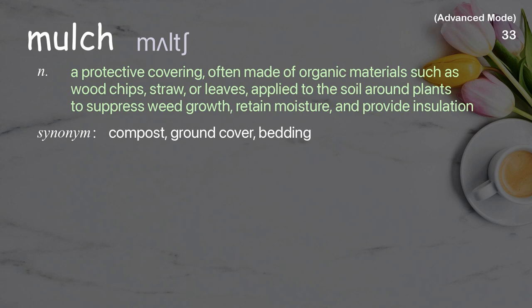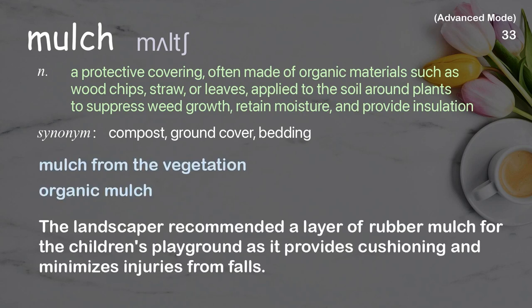Mulch: a protective covering, often made of organic materials such as wood chips, straw, or leaves, applied to the soil around plants to suppress weed growth, retain moisture, and provide insulation. Examples: organic mulch. The landscaper recommended a layer of rubber mulch for the children's playground as it provides cushioning and minimizes injuries from falls.